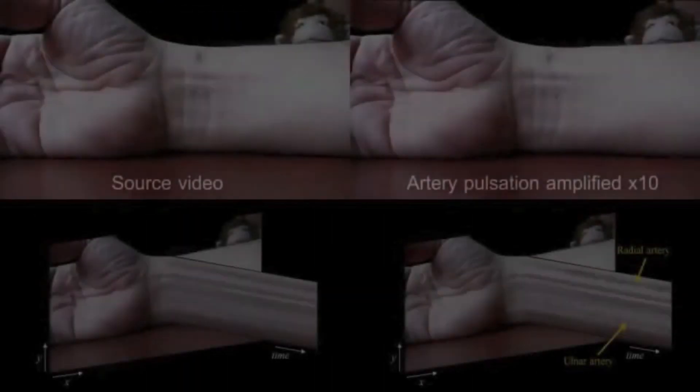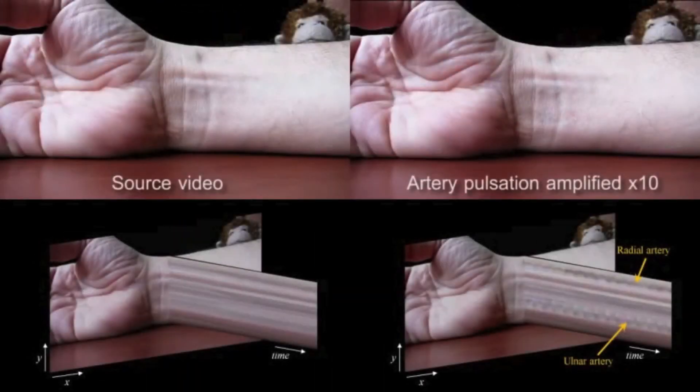The same algorithm can also reveal imperceptible motions, like the pulsing motions of arteries in the wrist.